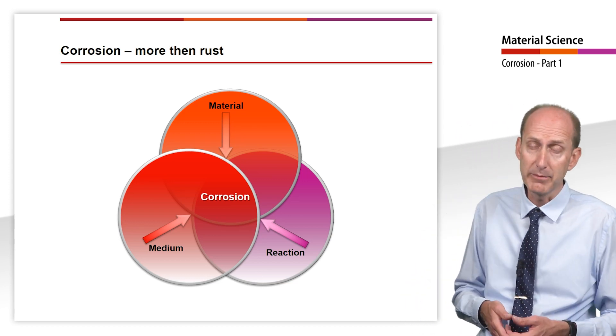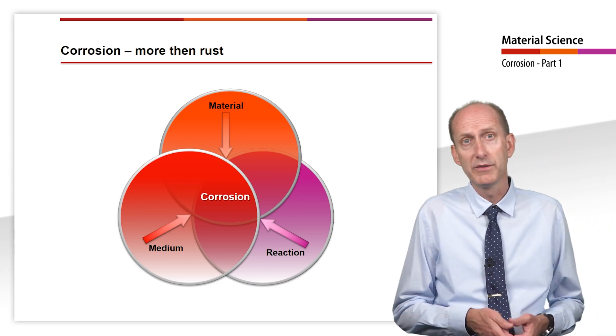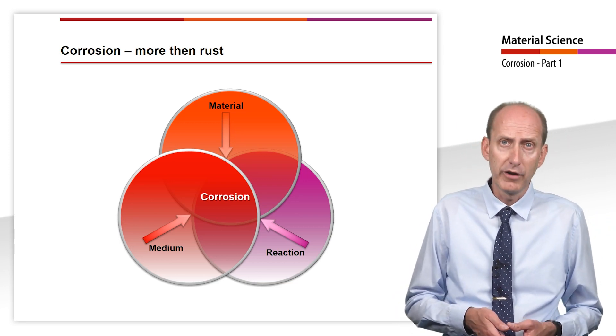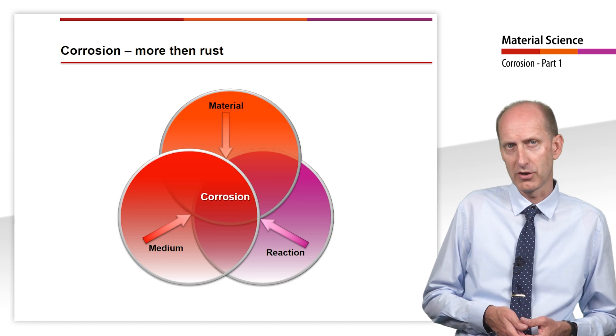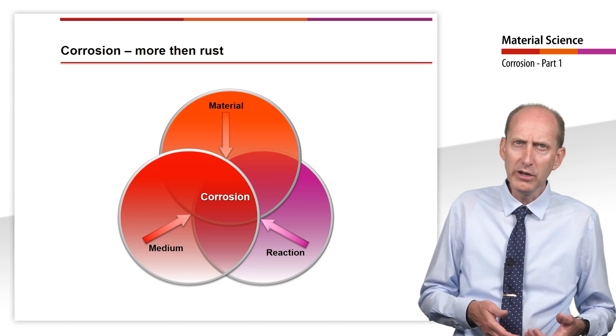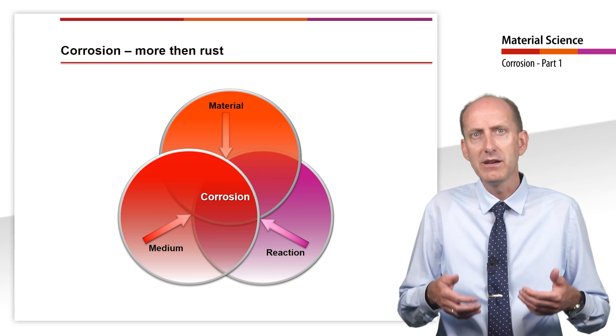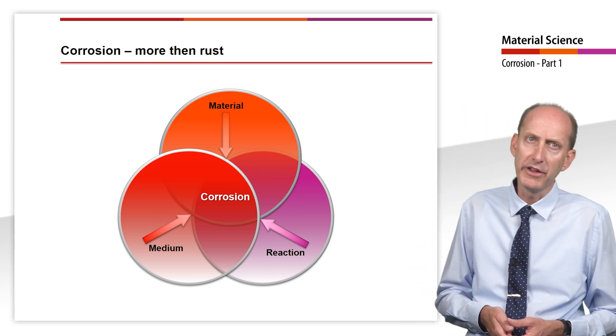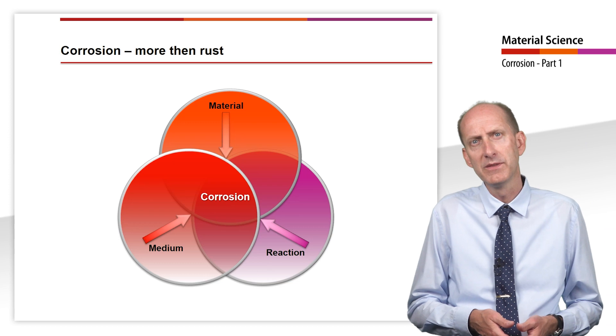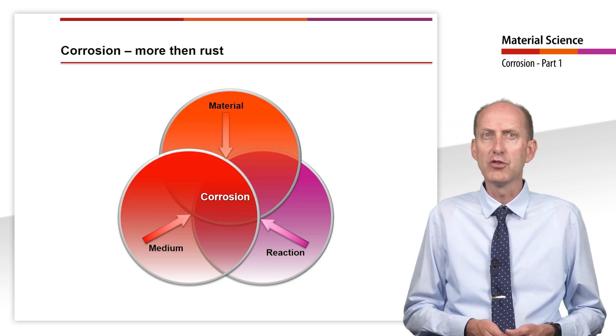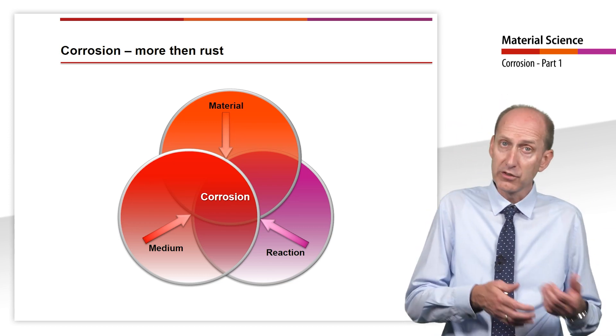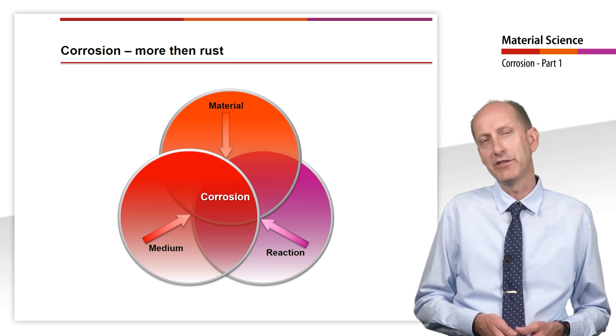The medium is characterized by temperature, pH value, conductivity, flow velocity and oxygen content. Only when the sum of this information is known can we make definitive statements about whether or not a reaction and the associated corrosion will occur and what corrosion rate, if any, is to be expected.